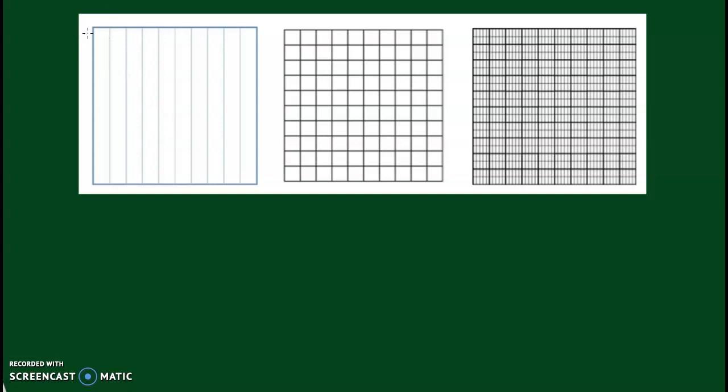Like the last video, we used a tenths, hundredths, and thousandths square. This square is the tenth square. The reason this is the tenth square is because there are ten sections. Each section represents one-tenth as a fraction, or we could write that as 0.1 for a decimal.